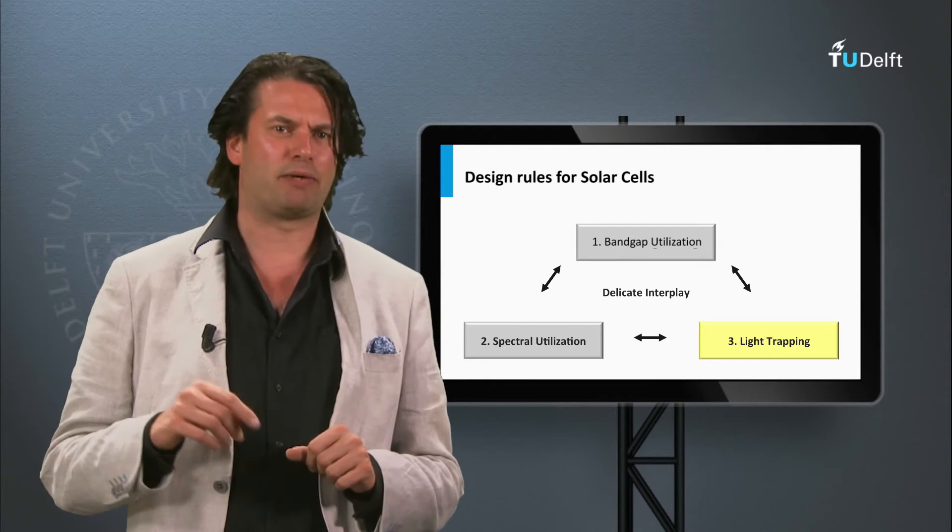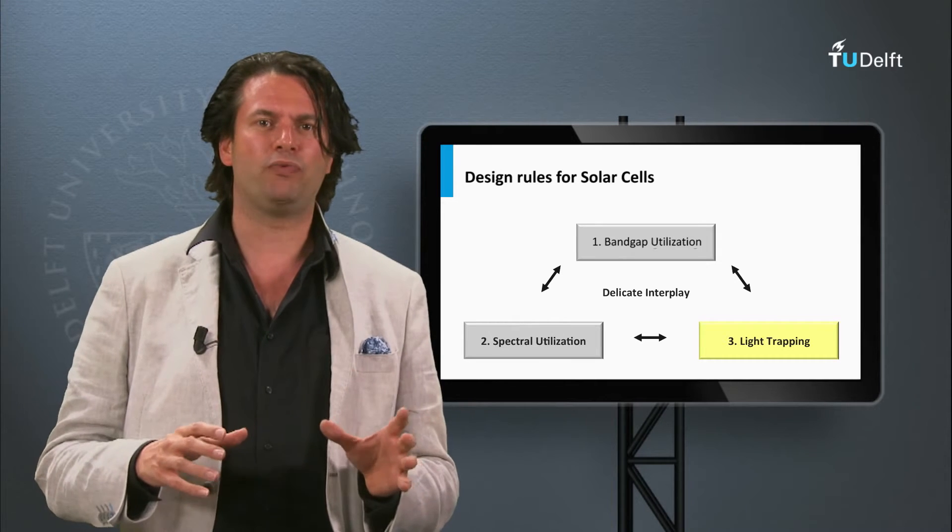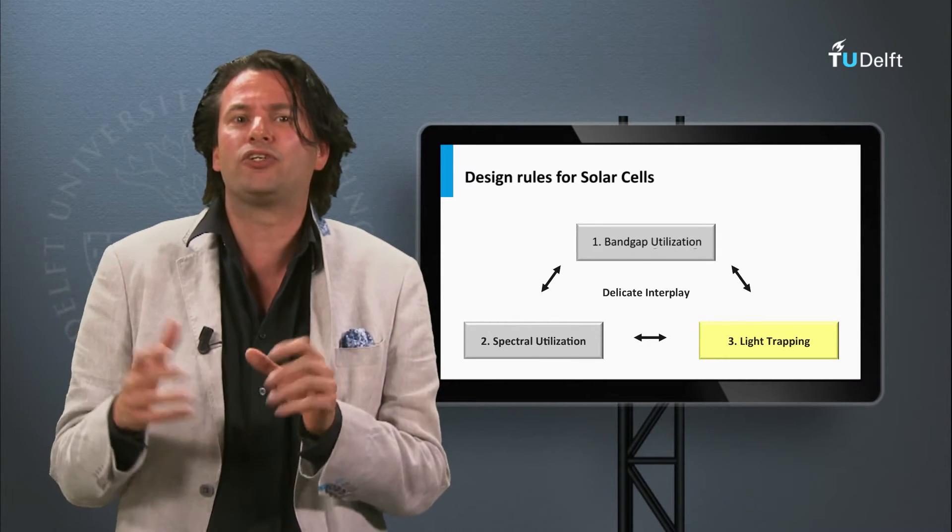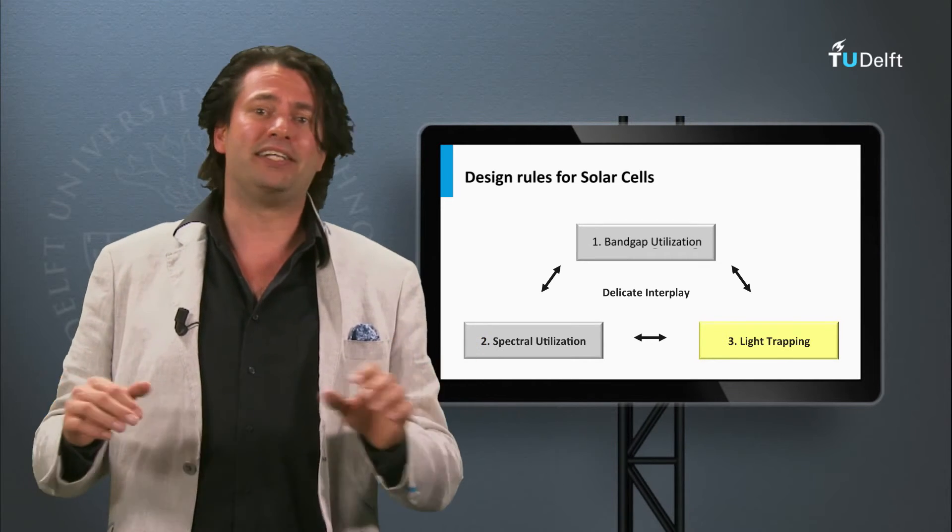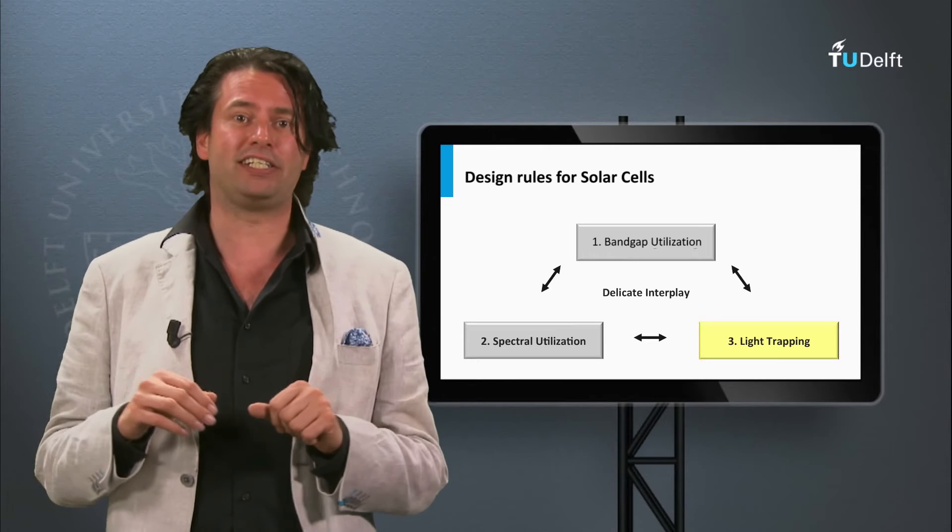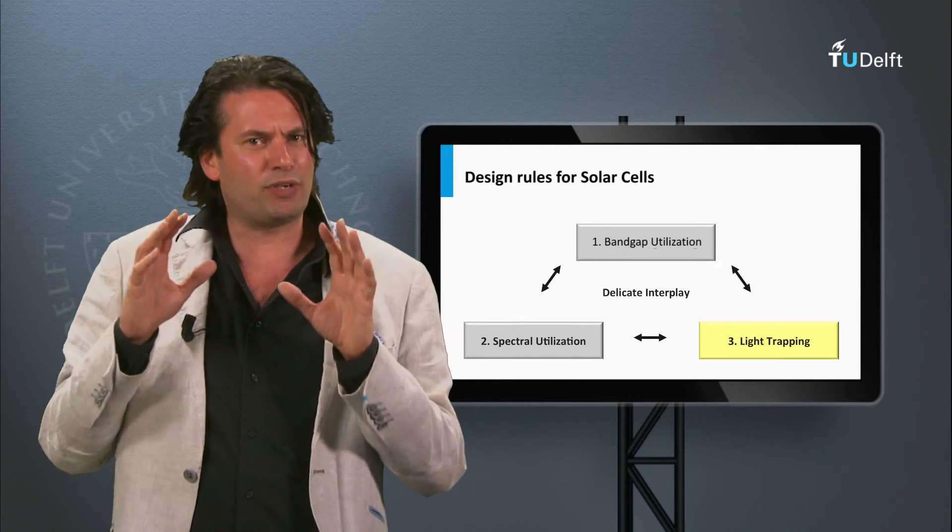The last engineering tool is light trapping. In the ideal solar cell we want all light that is incident on the solar cell to be absorbed in the absorber layer. However, nature has not made our life that easy.